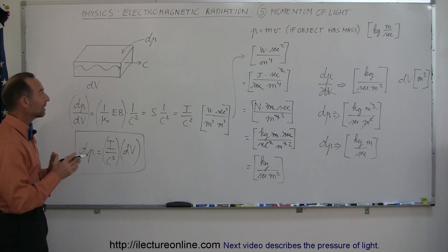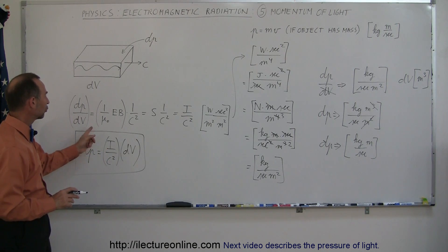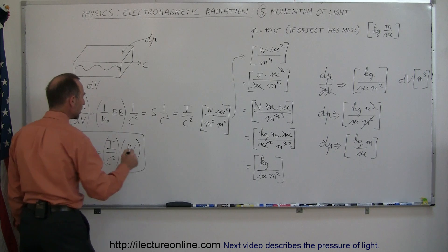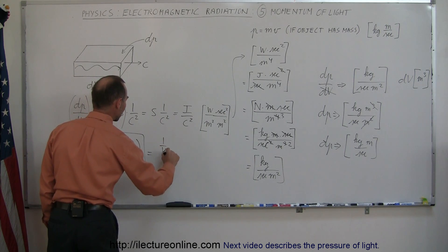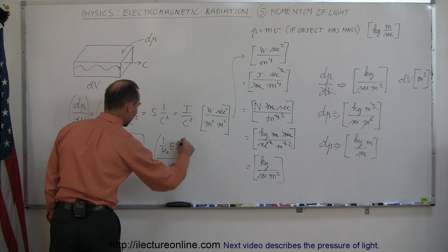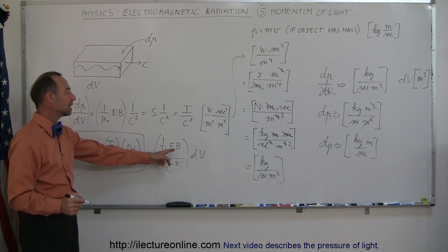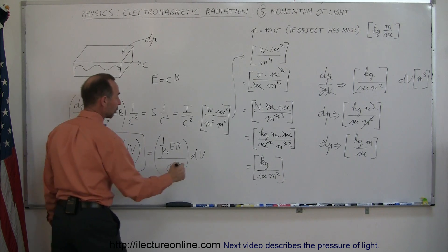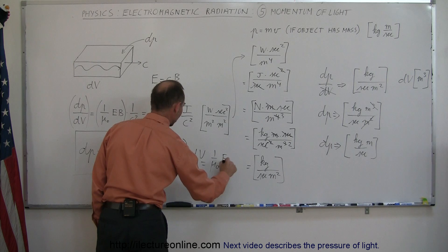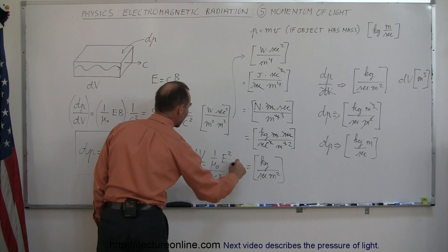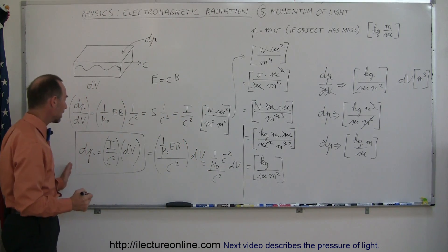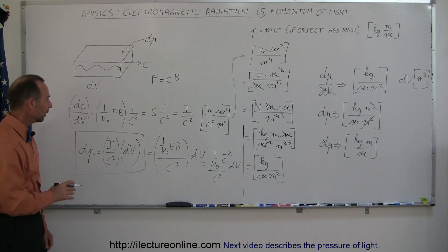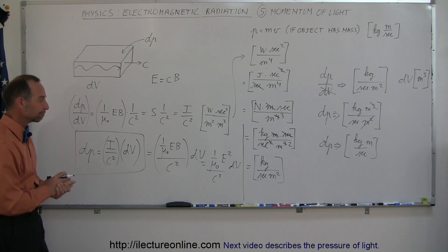This is huge — we now have the ability to find how much momentum is contained within electromagnetic radiation. Recall that I equals the magnitude of the Poynting vector, which equals one over mu-naught times E times B. So we can write dp as one over mu-naught times EB divided by c squared, times dV. If you prefer not to use both E and B, remember the relationship E equals c times B, so B equals E over c. Substituting gives dp equal to one over mu-naught times E squared divided by c cubed, times dV. In each form, we can find the momentum of sunlight or any electromagnetic radiation.